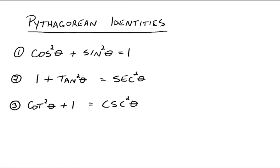You really only need to know one of the three Pythagorean identities, because if you know cosine squared theta plus sine squared theta equals 1, you can always derive the other two fairly fast.